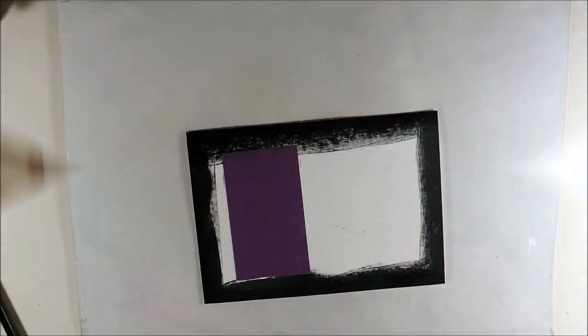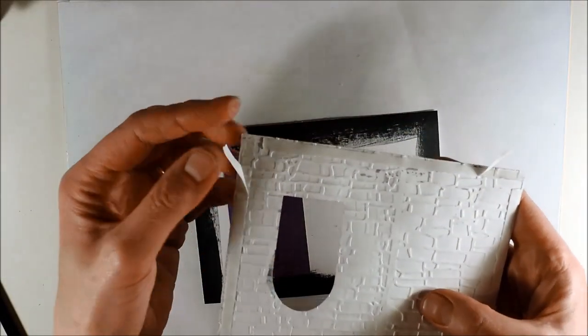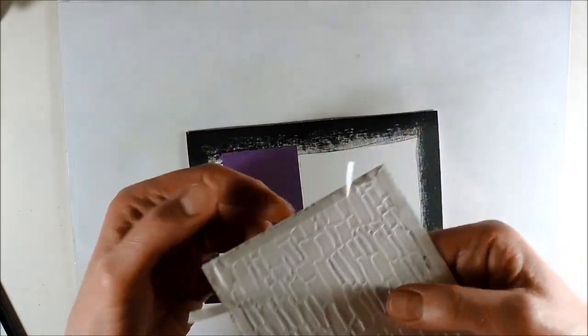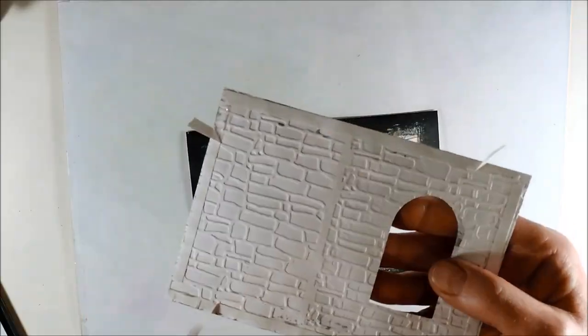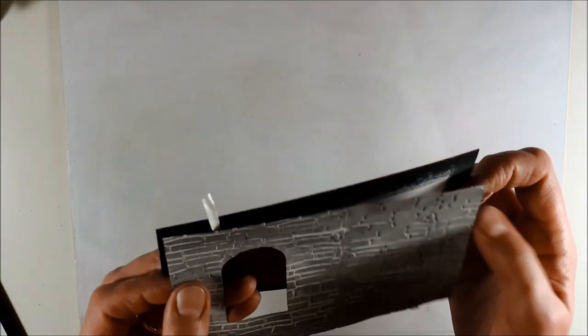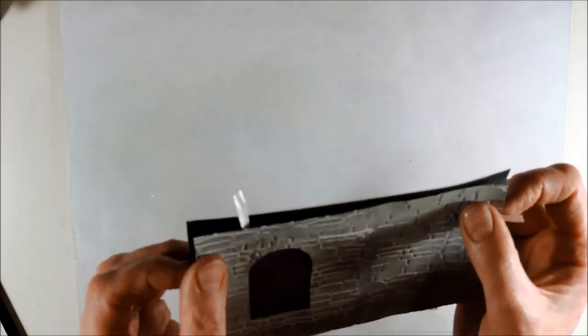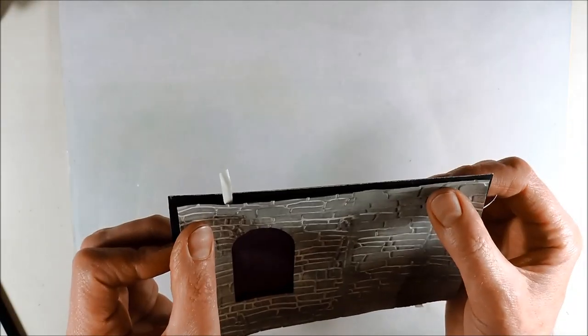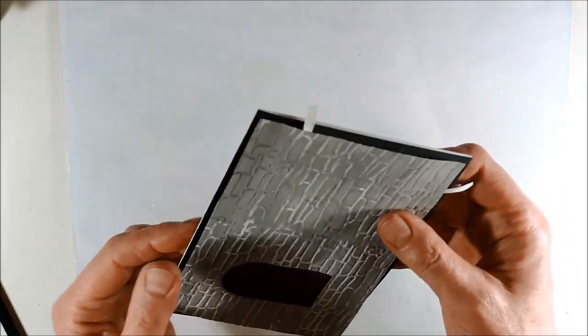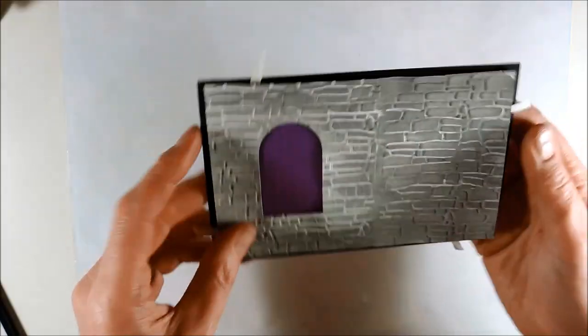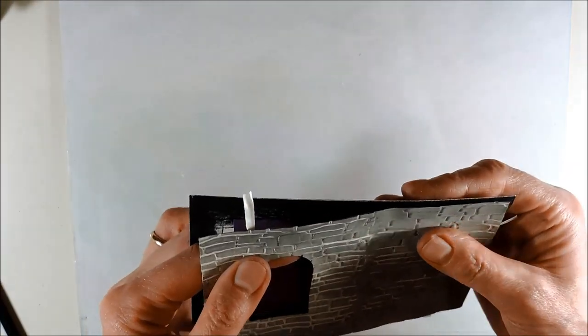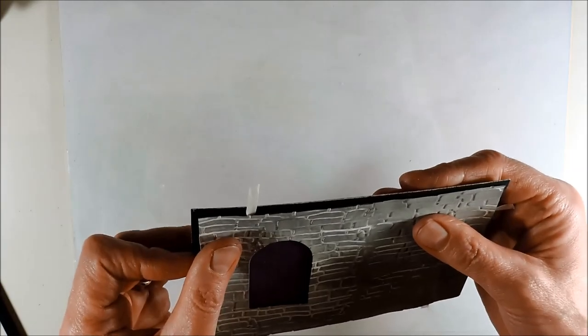By request, I am showing you how I adhere the panel using double-sided tape to my card. I am first peeling off the paper from four corners, and now I can easily position my panel. As you can see, if I don't like the position, I can easily remove the panel again.